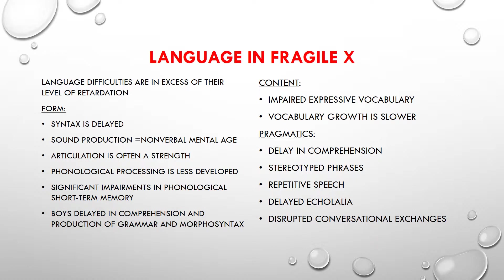There are delays in comprehension and production of grammar and morphosyntax. Expressive and receptive grammatical skills are comparable to those with and without comorbid autism. For content, you will find impaired expressive vocabulary, and rates of vocabulary growth are slower than typically developing children. In terms of use or pragmatics, competencies are closely aligned with children with autism. Pragmatics is a strong area of weakness within Fragile X Syndrome.